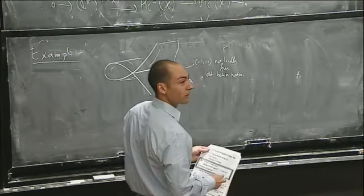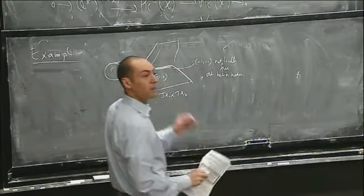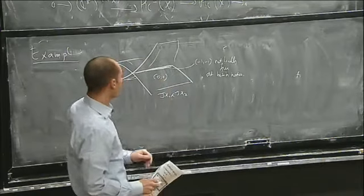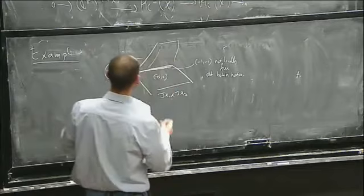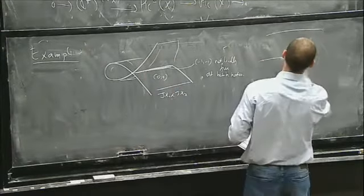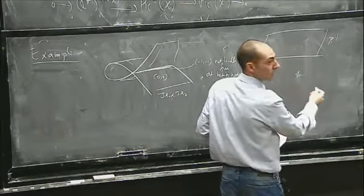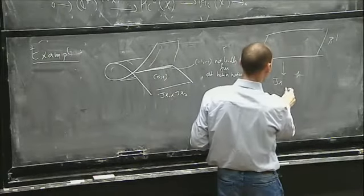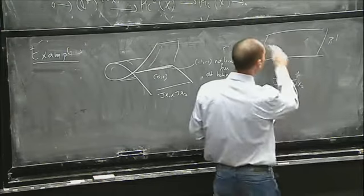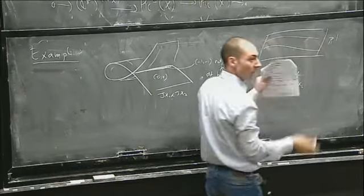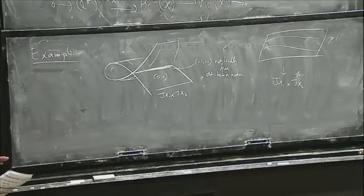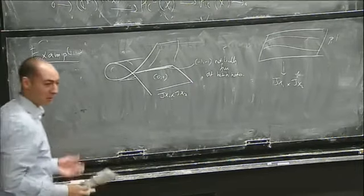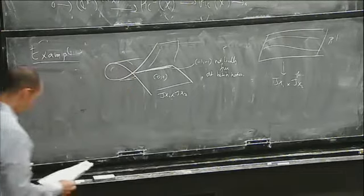The compactified Jacobian is compact. I took this C* and filled it into a P1 bundle over JX1 times JX2. Then I've got a 0 and infinity section, and then I glued them together. In another talk I went through a lot more of the details of this stability condition, but it ends up getting technical and doesn't necessarily make a better picture.